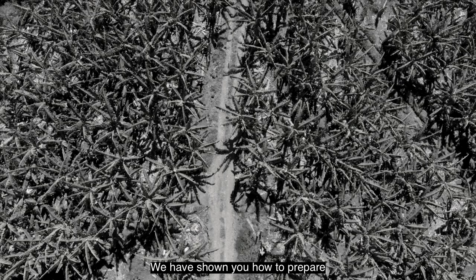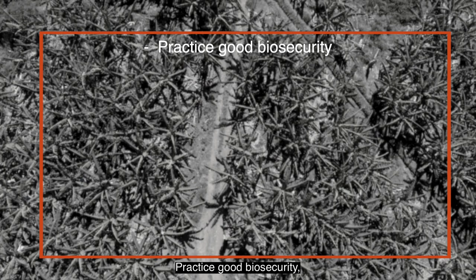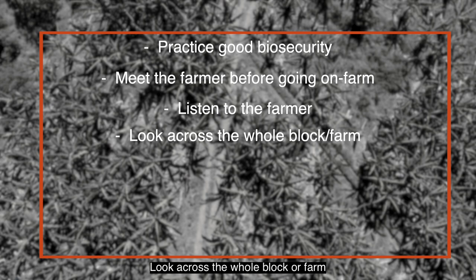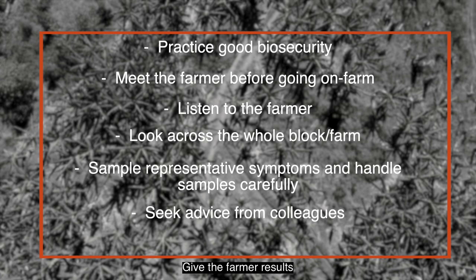We have shown you how to prepare for a farm visit and sampling for diagnosis of banana leaf diseases. In summary: practice good biosecurity; clean field equipment and boots before entering the farm; listen to the farmer for their observations; look across the whole block or farm to look for trends; sample representative symptoms and handle samples carefully; if you do not know what the problem is, seek advice from colleagues; give the farmer results as quickly as possible and suggest practical solutions. We all have a part to play in growing better bananas.